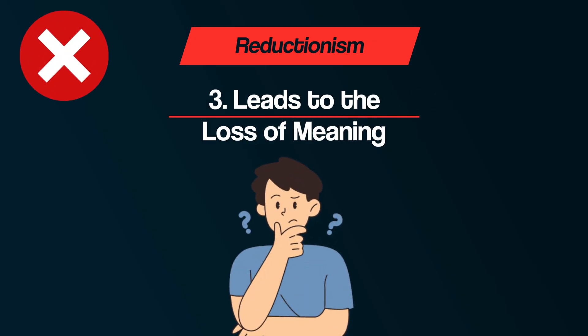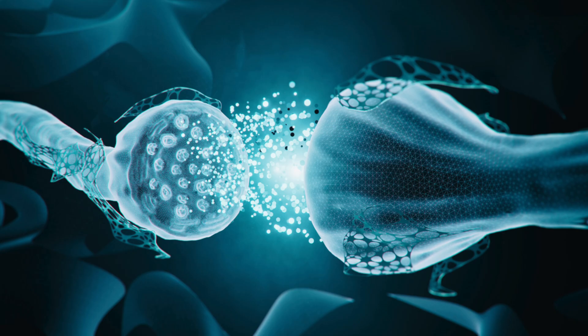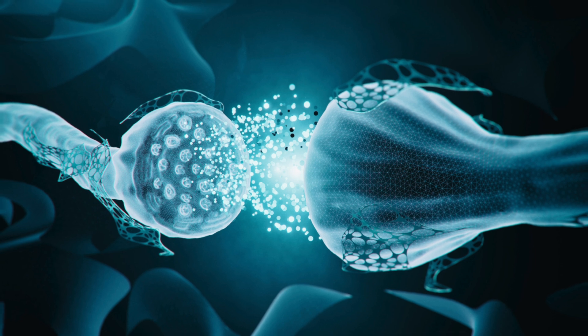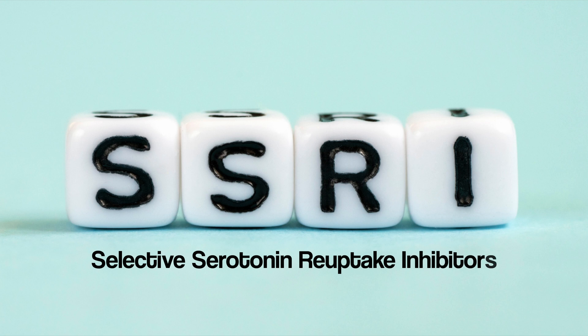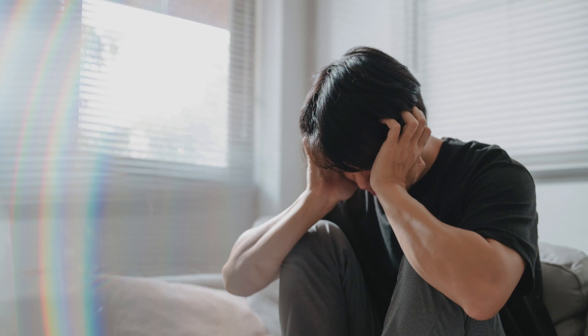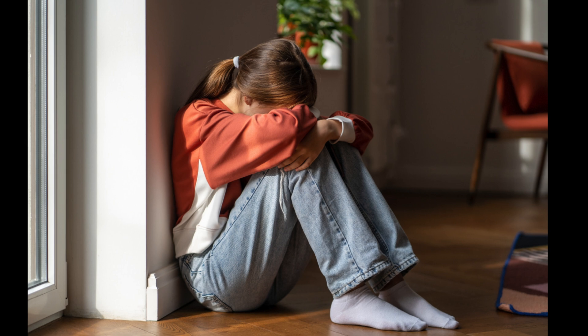However, some have argued against a reductionist view, because adopting a reductionist view leads to a loss of meaning. Consider OCD again — if lower biological levels are considered on their own, other reasons involved in the behavior may be overlooked. For example, SSRIs are often given to people with OCD, however this may miss the real causes of a child's obsessive compulsive behavior, such as past traumas and anxious experiences.